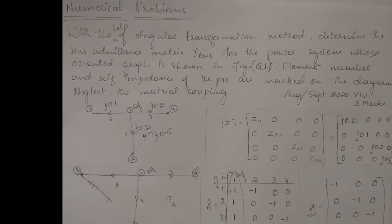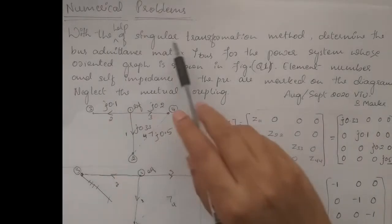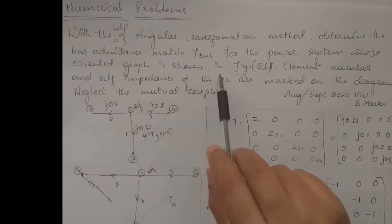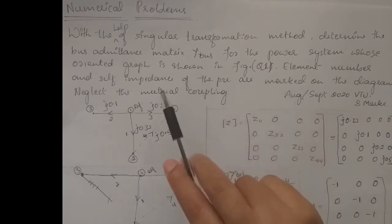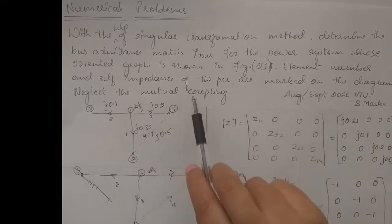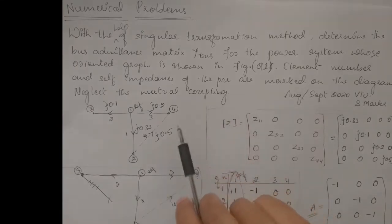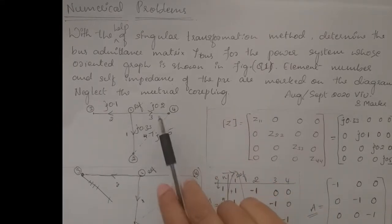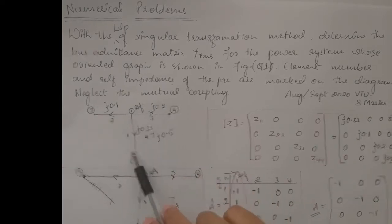Hello students. In today's class we are going to discuss numerical problems on the formation of Y-bus using the singular transformation method. This is the first problem: with the help of the singular transformation method, determine the bus admittance matrix Y-bus for the power system whose oriented graph is shown in the figure. Element number and self-impedance of the network are marked on the diagram. Neglect the mutual coupling.